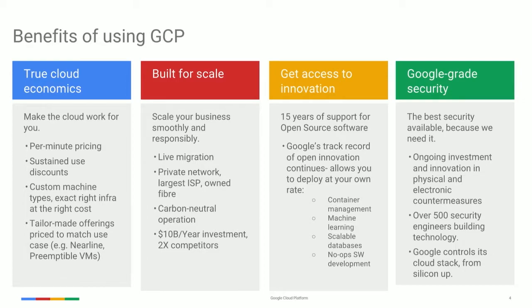We've also introduced preemptible VMs, which are ideal for batch processing and can lower the cost by up to 80%. And near-line storage is yet another instance where Google provides object store capabilities with somewhat reduced availability, while lowering cost even further.